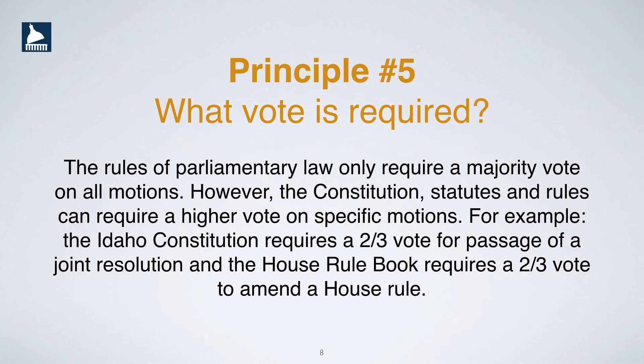Principle number five: what vote is required? The rules of parliamentary law only require a majority vote on all motions. However, the Constitution, statutes, and rules can require a higher vote on specific motions. For example, the Idaho Constitution requires a two-thirds vote for passage of a joint resolution, and the House rule book requires a two-thirds vote to amend a House rule.